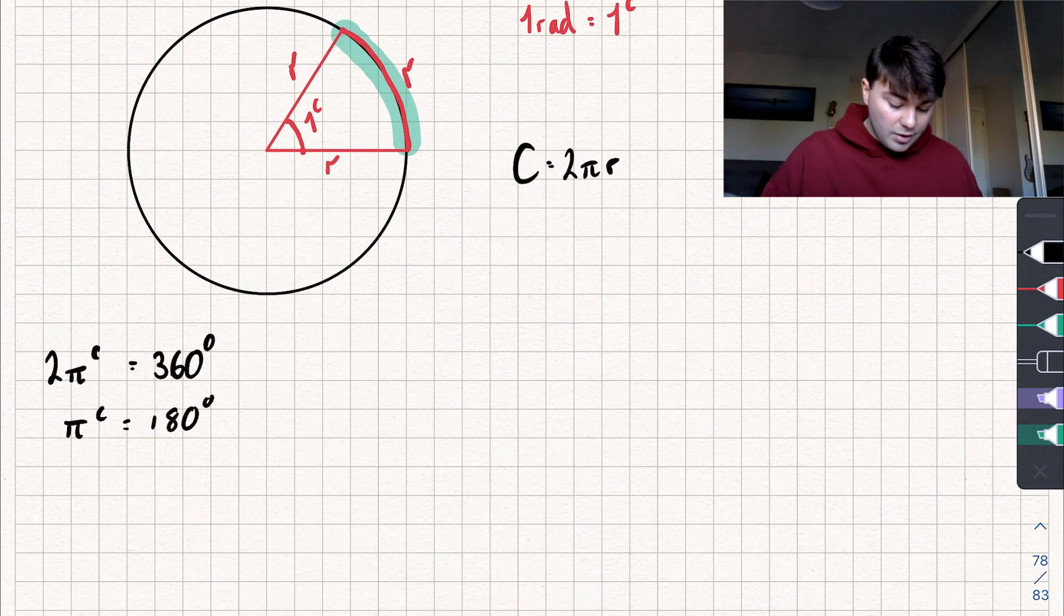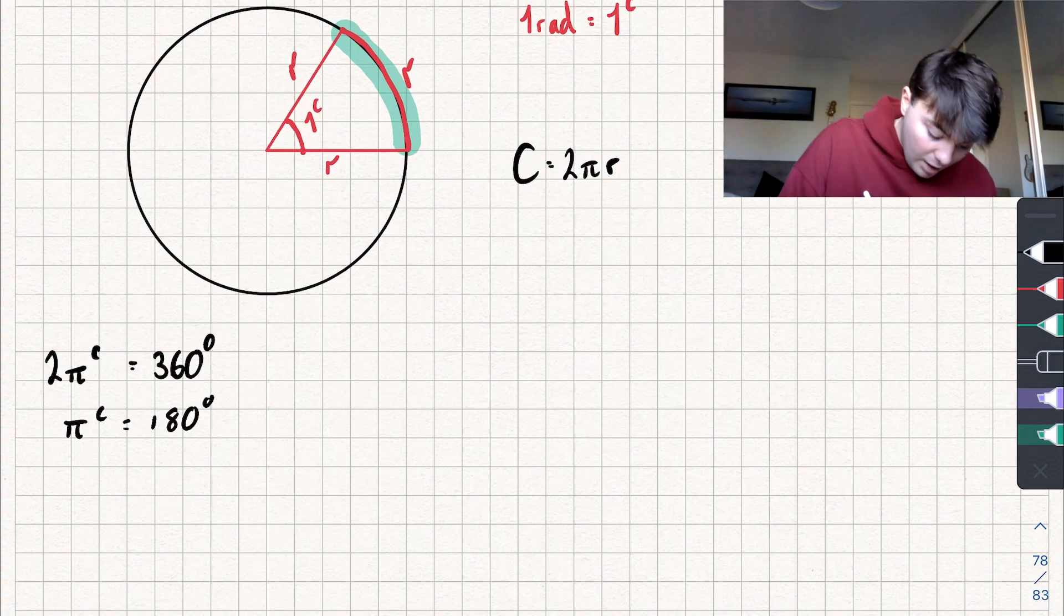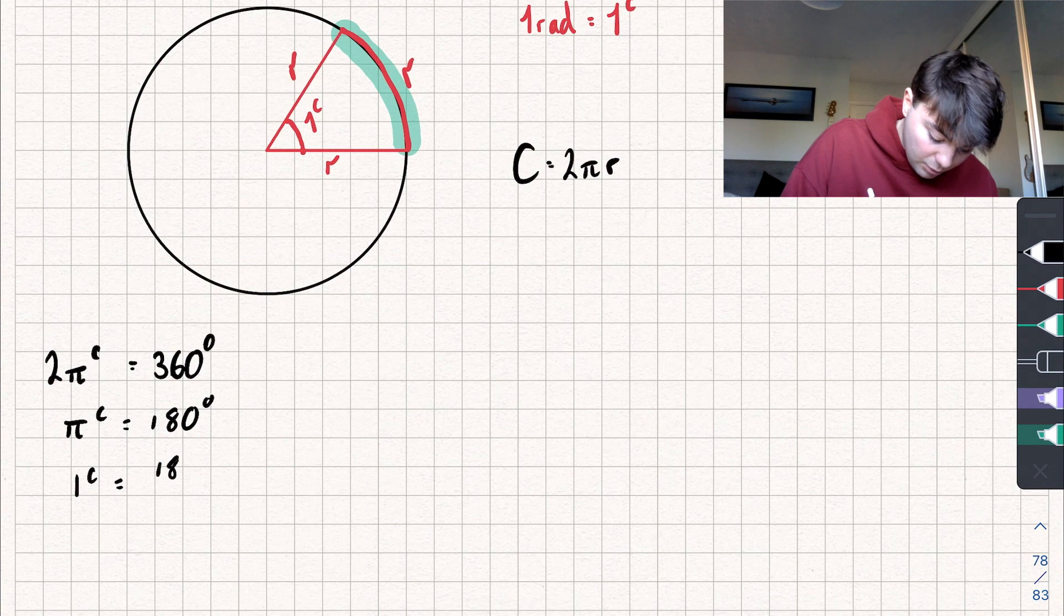Let me see how many degrees are there in one radian. To work that out we could divide both sides by π and we get that one radian is equal to 180 degrees divided by π.